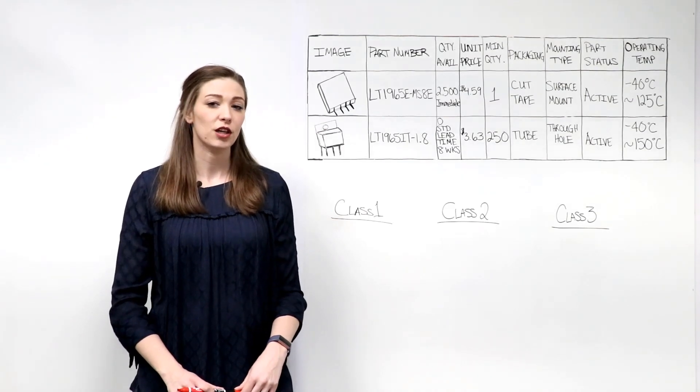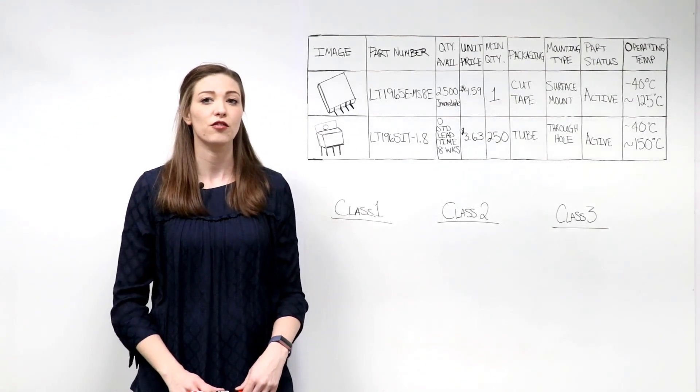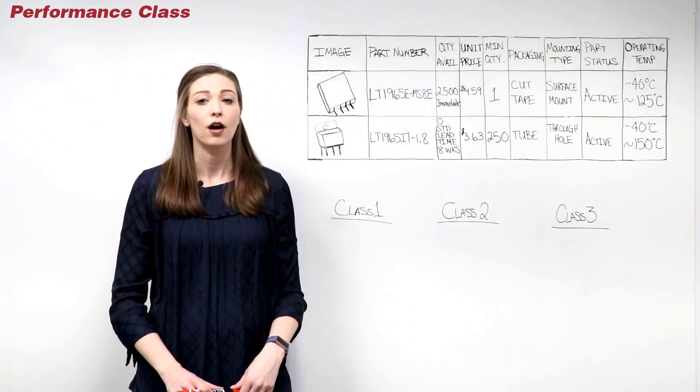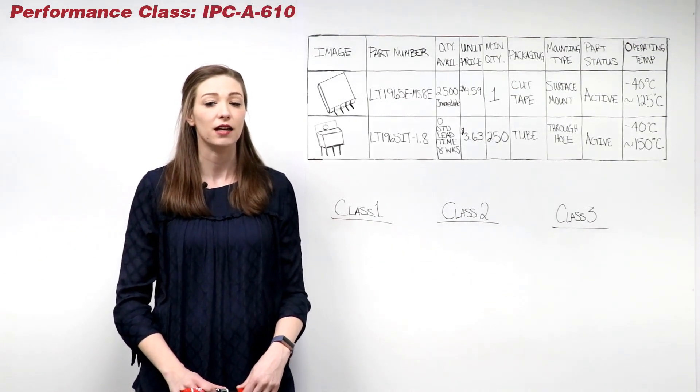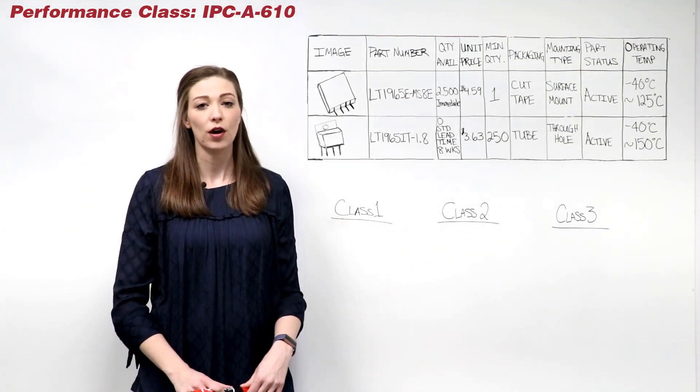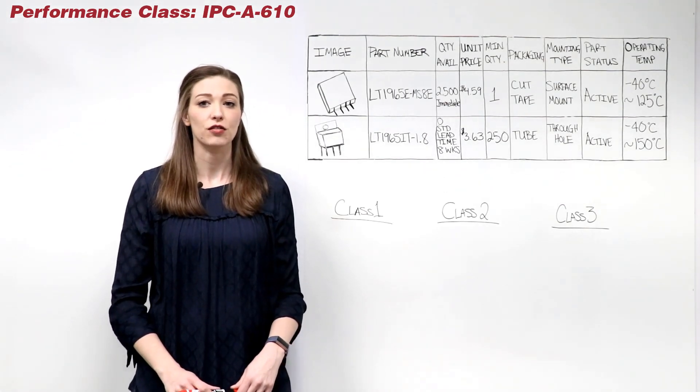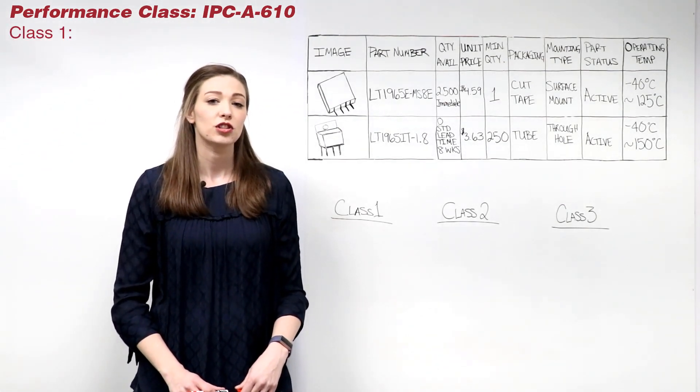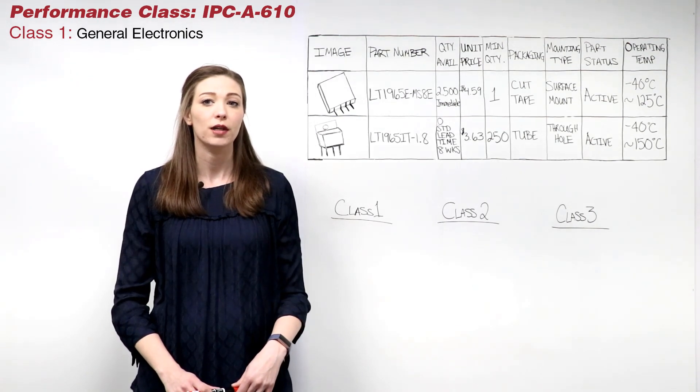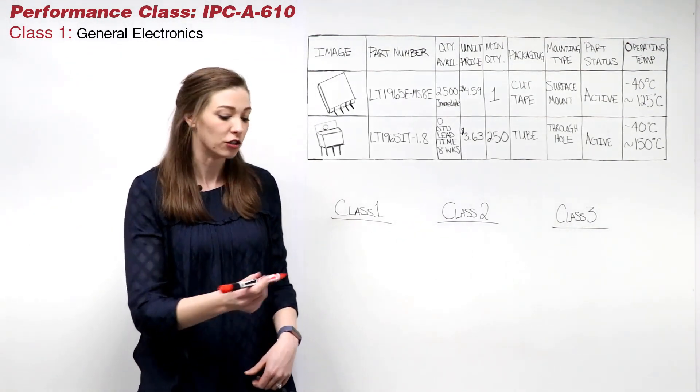The first step in component selection is determining the performance class of your assembly. According to IPC-A-610, an assembly can be categorized as either Class I, Class II, or Class III. Class I includes general electronics whose major requirement upon assembly completion is to function.